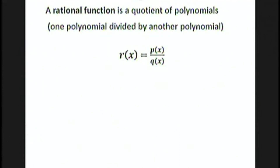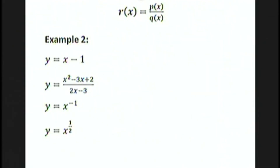A rational function is a quotient of polynomials — in other words, one polynomial divided by another polynomial. Every polynomial is also a rational function, because a polynomial can just be written over the polynomial 1. So y equals x minus 1 is a quotient of the polynomial x minus 1 divided by the polynomial 1.